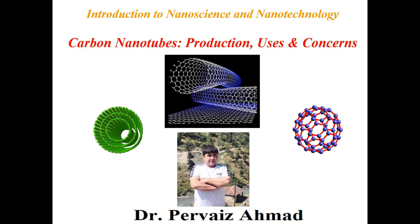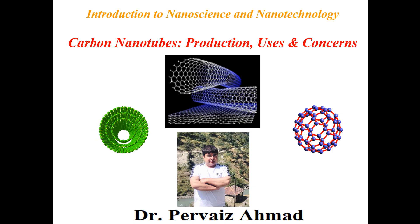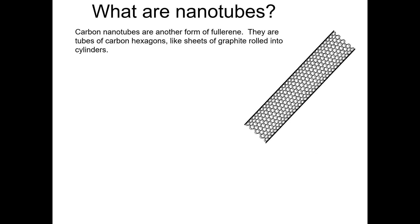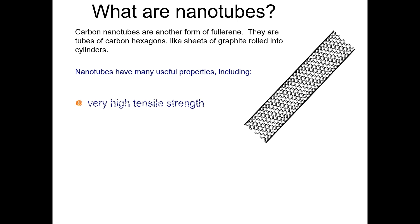An introduction to nanoscience and nanotechnologies. In today's lecture, we will talk about carbon nanotubes from production to uses and concerns. I'm Dr. Purves Eymar. So, what are carbon nanotubes? Carbon nanotubes are another form of carbon. They consist of carbon hexagons, like sheets of graphite, rolled into cylinders, as you can see in the figure - a tubular structure you can clearly observe and identify.